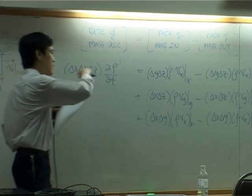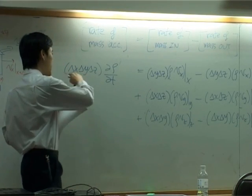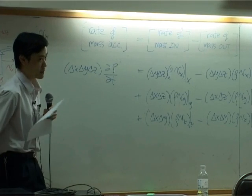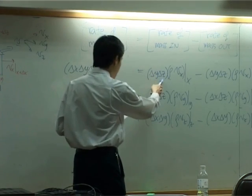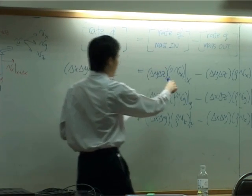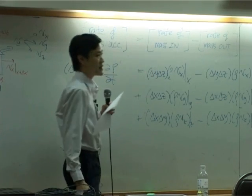If you divide the whole equation here by delta x, delta y, delta z, this part will be cancelled out and you will have delta x as the denominator.